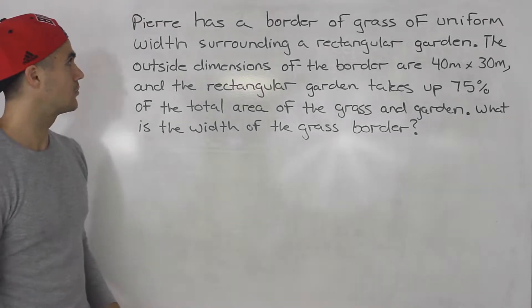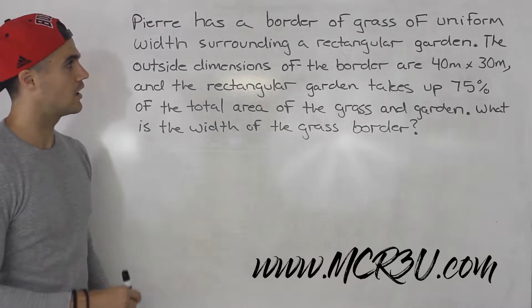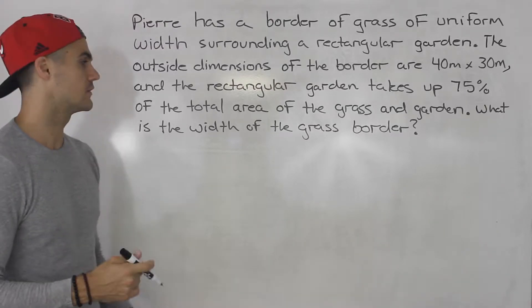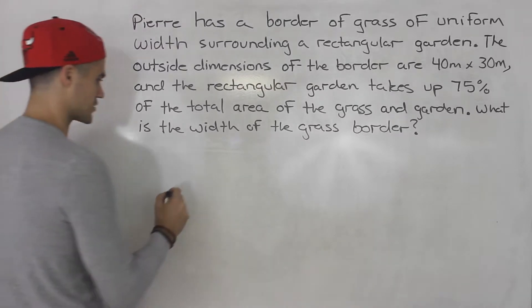Welcome back everybody. Moving on to another word problem. Pierre has a border of grass of uniform width surrounding a rectangular garden. So from there let's just draw a diagram.